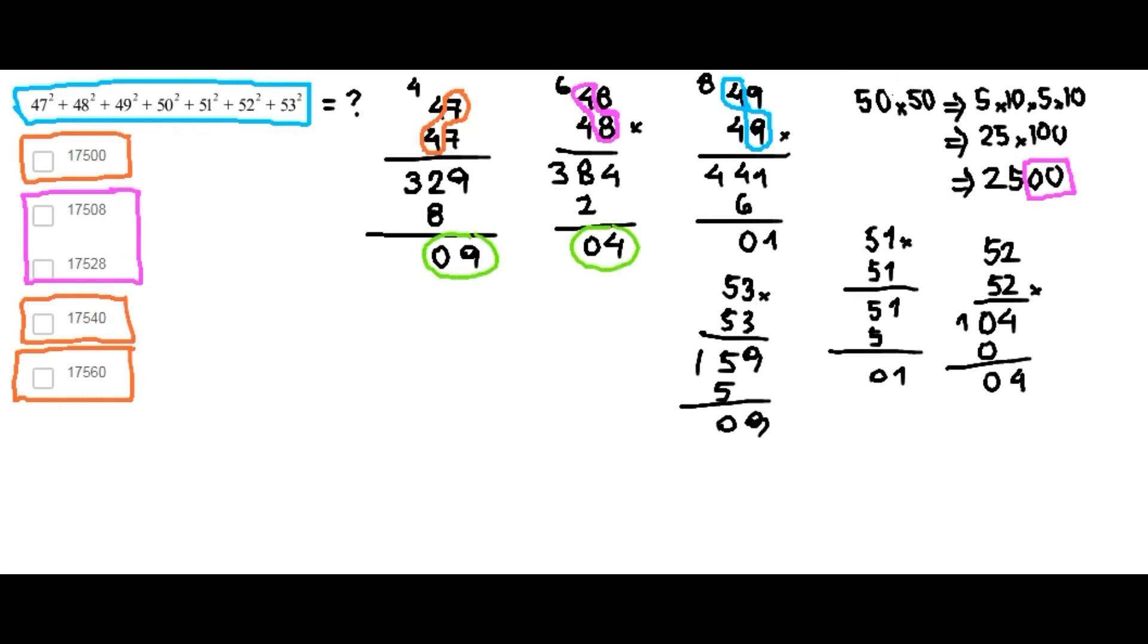Once we have all the 10's and units digit of each of the powers, we need to find the sum of each of them. So, we have 0, 9, 0, 4, 0, 1, 0, 4 and 0, 9. The sum is the following.